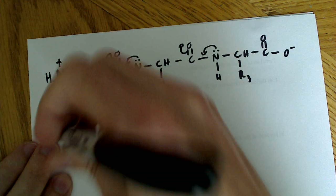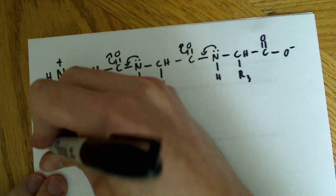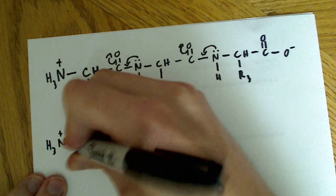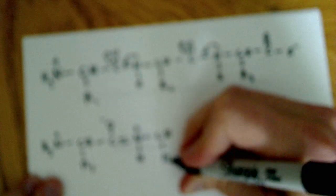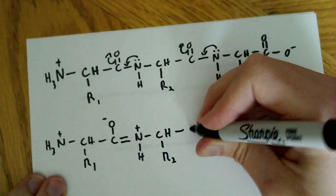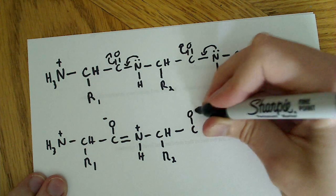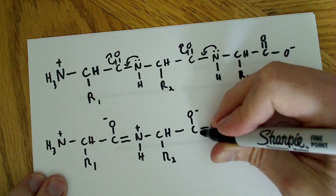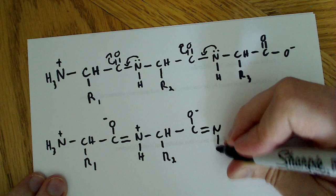So if we redraw the peptide and we show that, we can see the partial double bond character here. And this just demonstrates that this is a real thing, this is a legitimate resonance structure, there's nothing strange going on here, basic organic chemistry type of stuff.